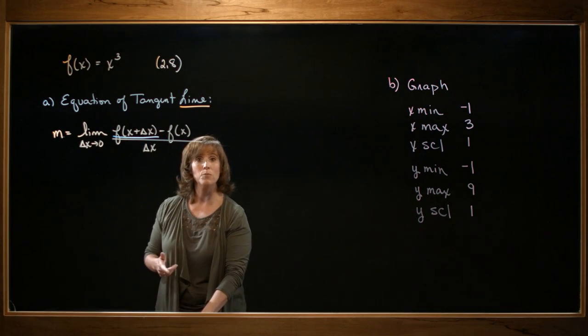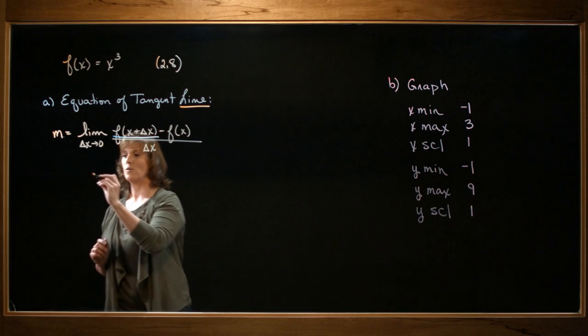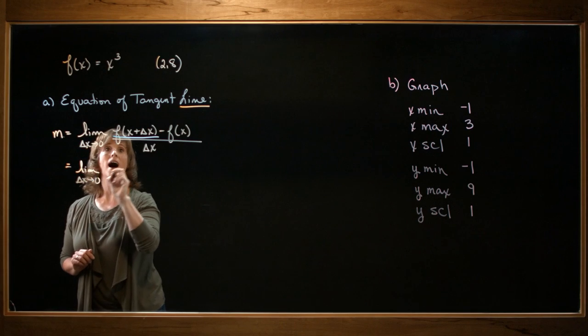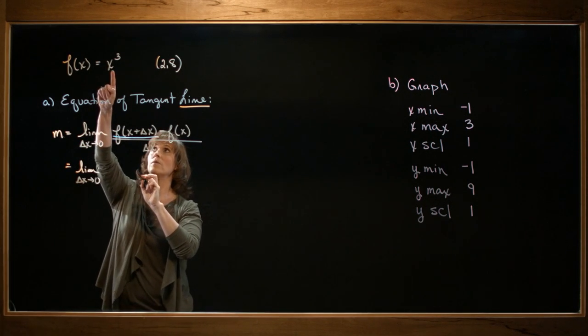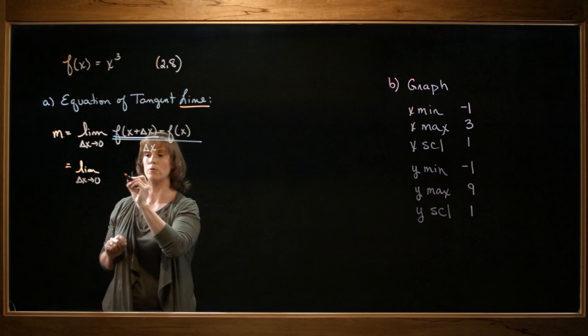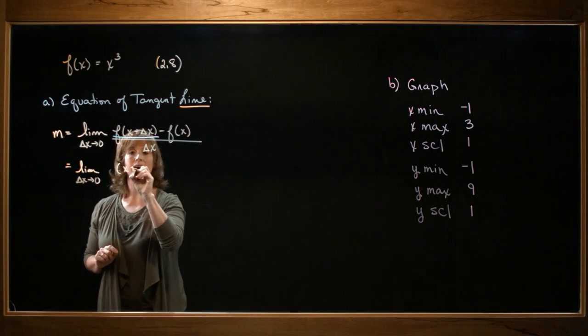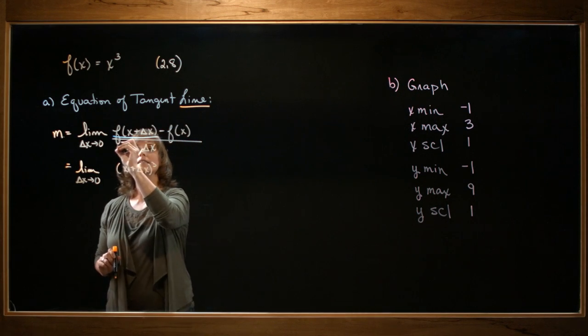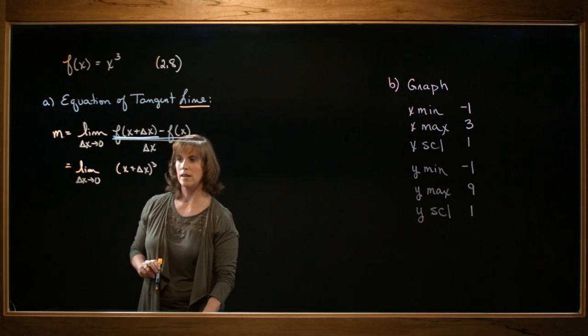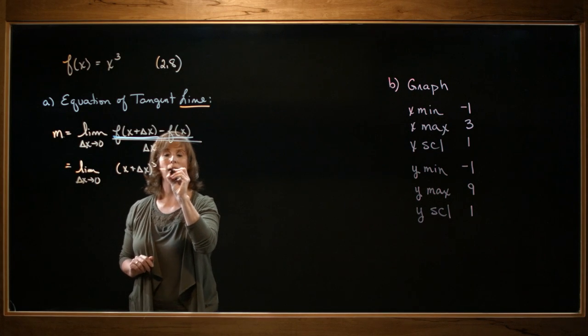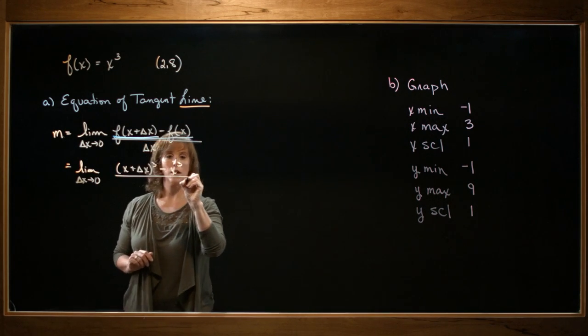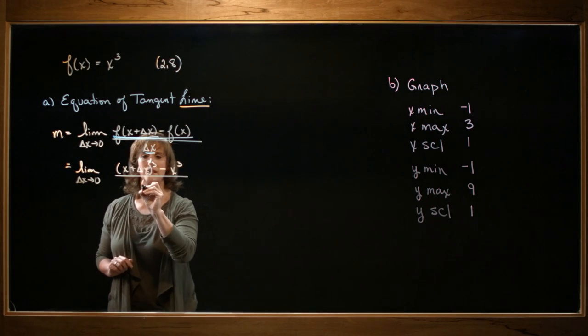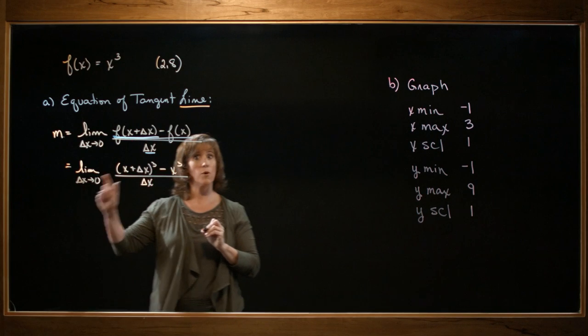So let's go ahead and start with the inside piece, which is going to be the function value when the input is x plus delta x. So I'm going to have the limit as delta x approaches 0 of f of x plus delta x. Well, my function tells me to cube the input. So that's going to be x plus delta x cubed. The second part is to subtract the f of x, so that means I need to subtract x cubed. The third part says divide by delta x, so divide by delta x. And then the last part is to take that limit.